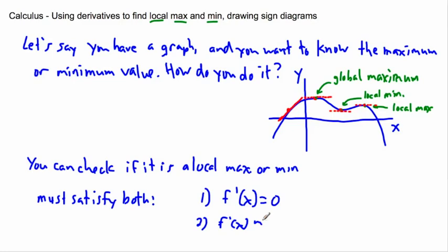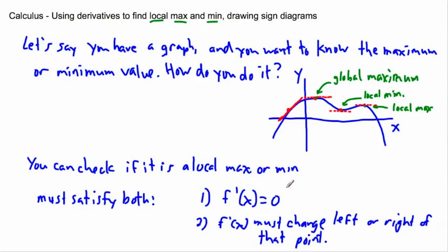We have to say this: f prime of x must change sign left or right of that point. We would take our equation, find what values of x make the derivative equal to zero — maybe there's one, maybe there's lots. In the case of this weird-looking graph, I would expect three places where f prime of x is zero, at whatever these three x values are. But furthermore, f prime of x must change sign.